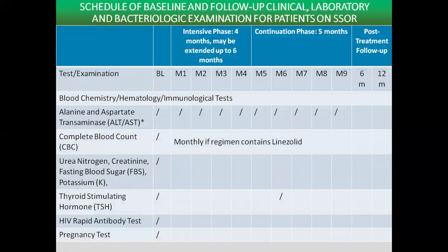For blood chemistry and hematology, the liver panel (AST/ALT) must be monitored monthly due to the large number of drugs being taken. CBC is done at baseline, but if the regimen contains linezolid, it must be checked monthly as well. BUN, creatinine, FBS, and TSH are done every six months. HIV rapid test and pregnancy test are done at baseline only. If the monthly AST/ALT result is higher than the upper limit of normal, we consider doing a total bilirubin test.